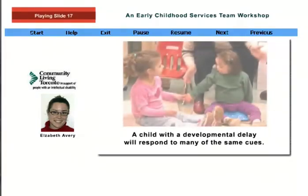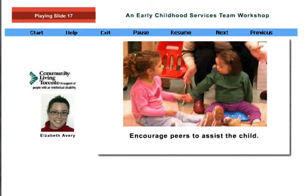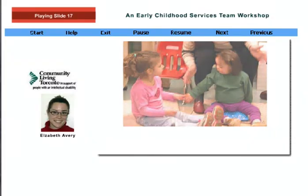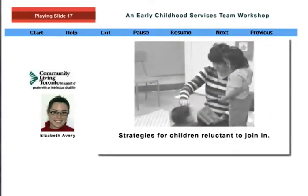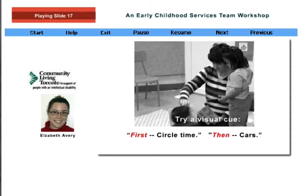A child with a developmental delay will respond to many of the same cues suggested earlier. Seating the child between peers who provide a good role model and encouraging them to assist the child are good strategies. Slowing the words and actions down and repeating the song twice gives children time to organize their response and gives them extra singing practice. Additional strategies may be needed for children who are reluctant to join music circle and break from a favorite activity. Use a consistent song to make the transition to circle, and try a visual cue that states 'first circle time, then cars.' The second activity needs to be a highly desirable one that would be reinforcing for the child.